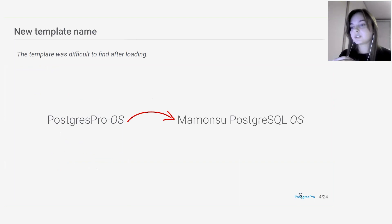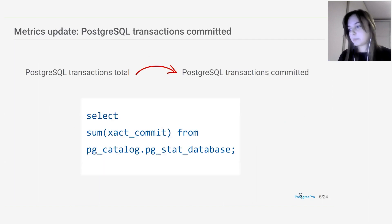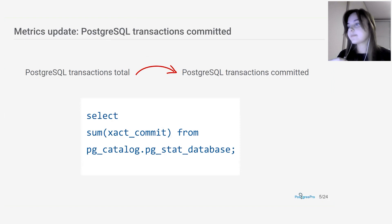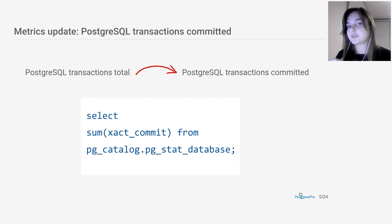You should pay attention to these changes if you want to upgrade Mamoncel. For example, we changed the template name to a more suitable Mamoncel Postgres name. The next small change is the total transactions metric name switch to committed transactions — this is logically more correct. The old name might lead to incorrect conclusions, as the query shows only the number of committed transactions, not the total number of transactions in the cluster regardless of their status.